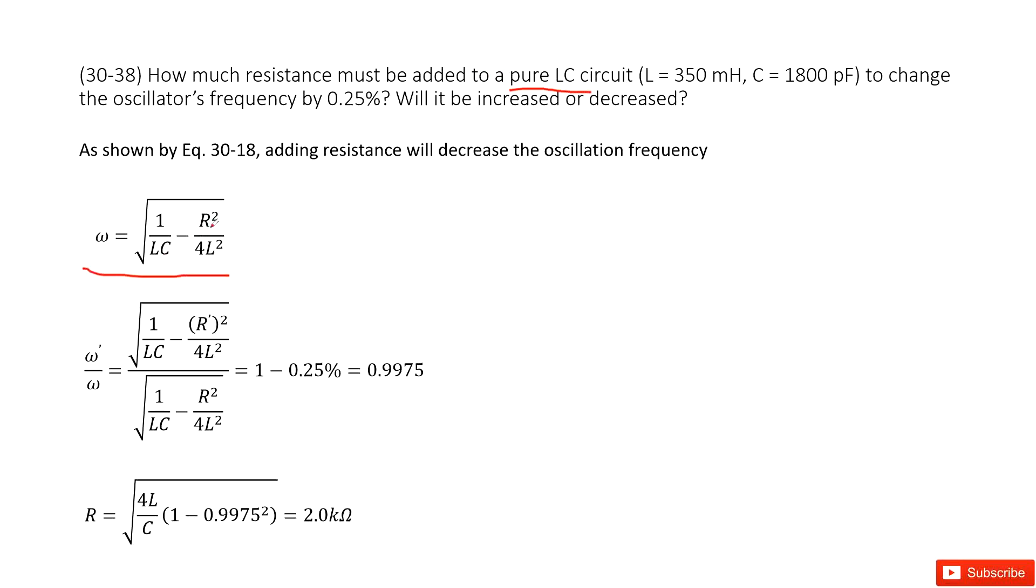You can see if R is added, that means R is increased. So this term increases, which means the total term for omega will decrease because there is a negative sign. So we can see the frequency will decrease, and it tells us the frequency will decrease by 0.25%.